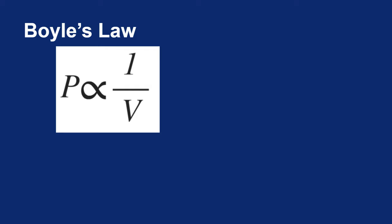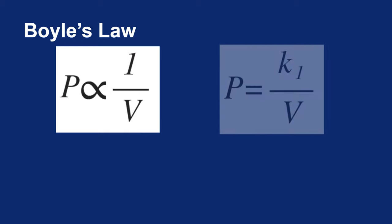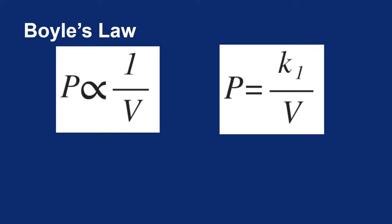Now if you don't like the proportionality symbol, you can get rid of it. You can make it an equal sign. But in order to make that an equal sign, you have to introduce a constant. So we can write this equation to say that pressure equals a constant, and I am going to call this constant K1. It is called K1 because we are going to see several constants coming up. So pressure is going to equal a constant divided by volume.